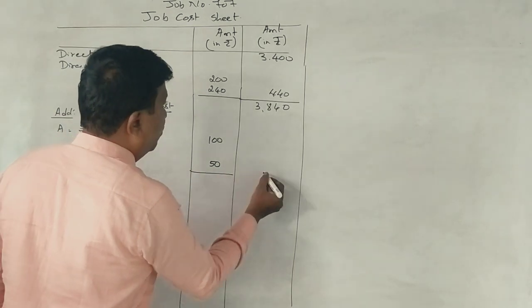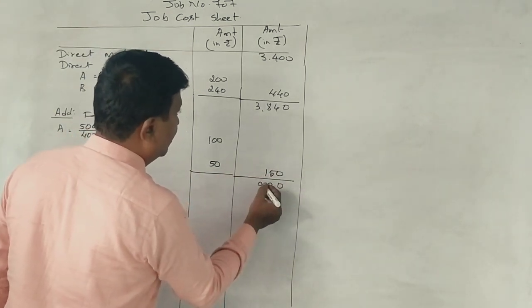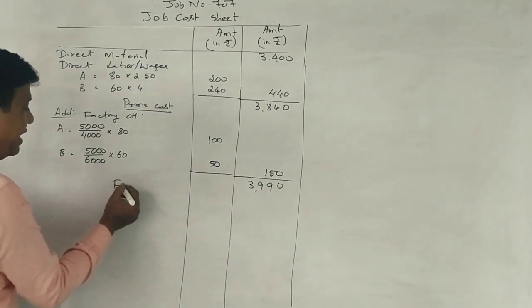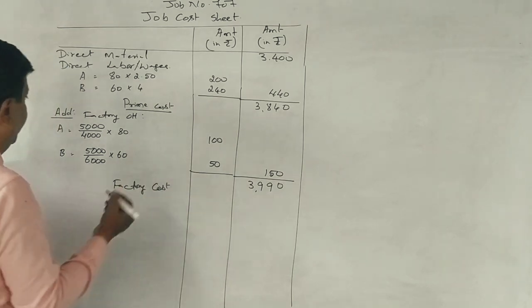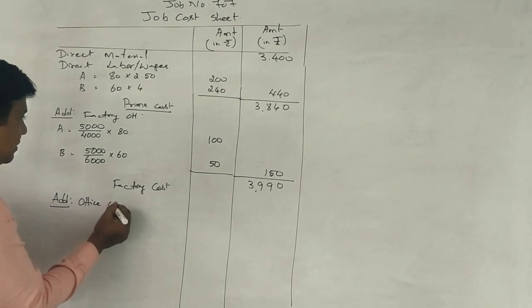Now, 150 rupees, how much money is it? Rs. 3,990. This is the factory cost. Next, office.